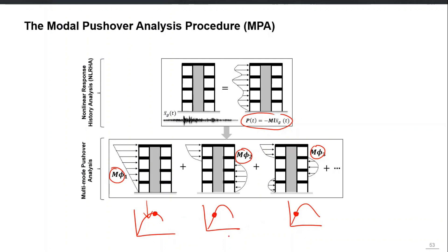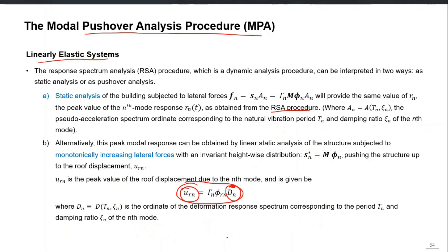We then combine those responses using SRSS or CQC to get the combined inelastic responses. In the MPA procedure you do not get the fluctuating time histories of the response of each mode; you directly get the peak response for each mode. UMRHA has a benefit over MPA in that it provides the fluctuating time histories for each mode, while MPA directly gives the peak responses.